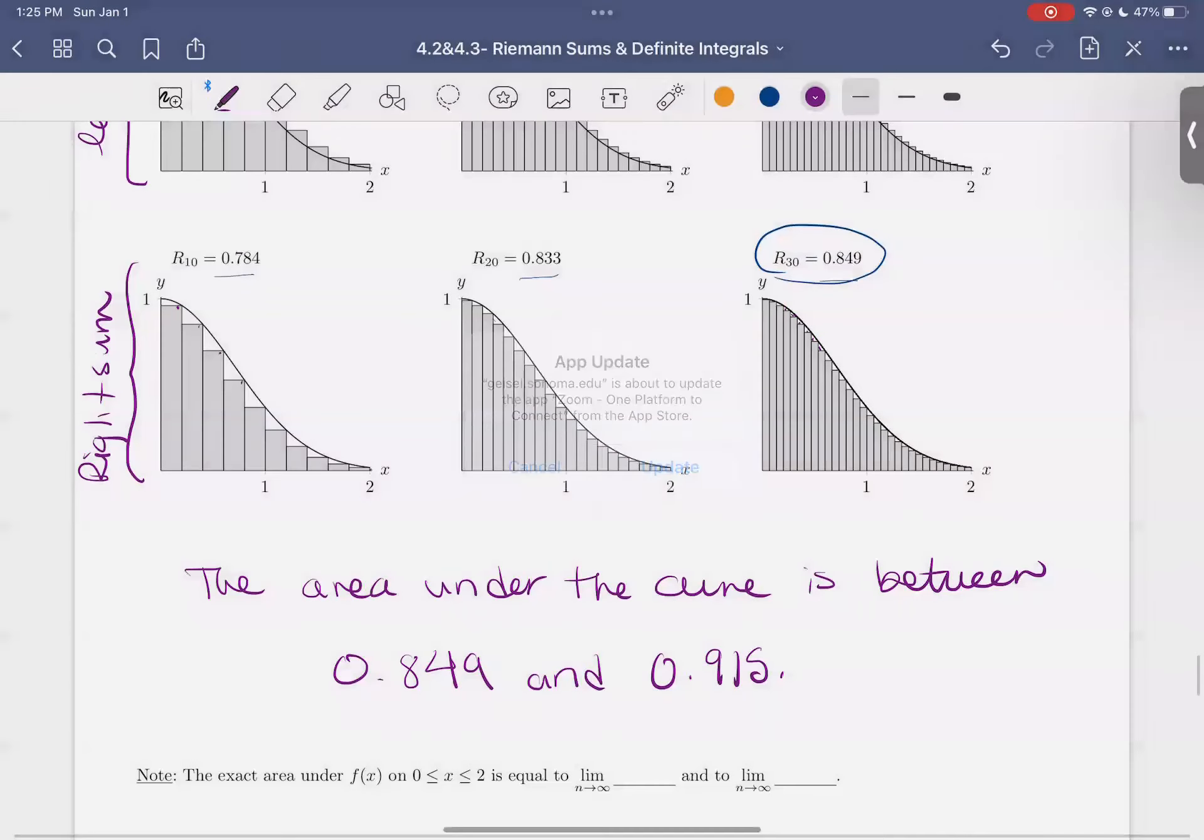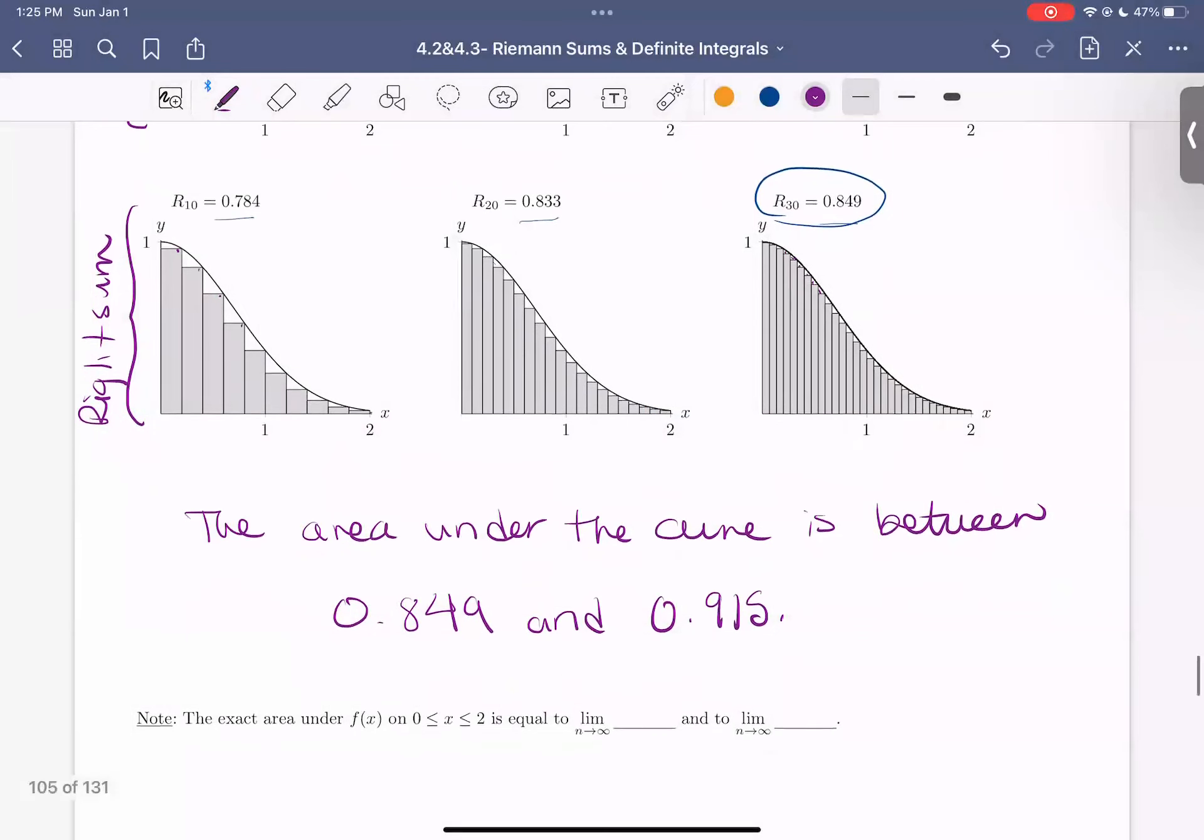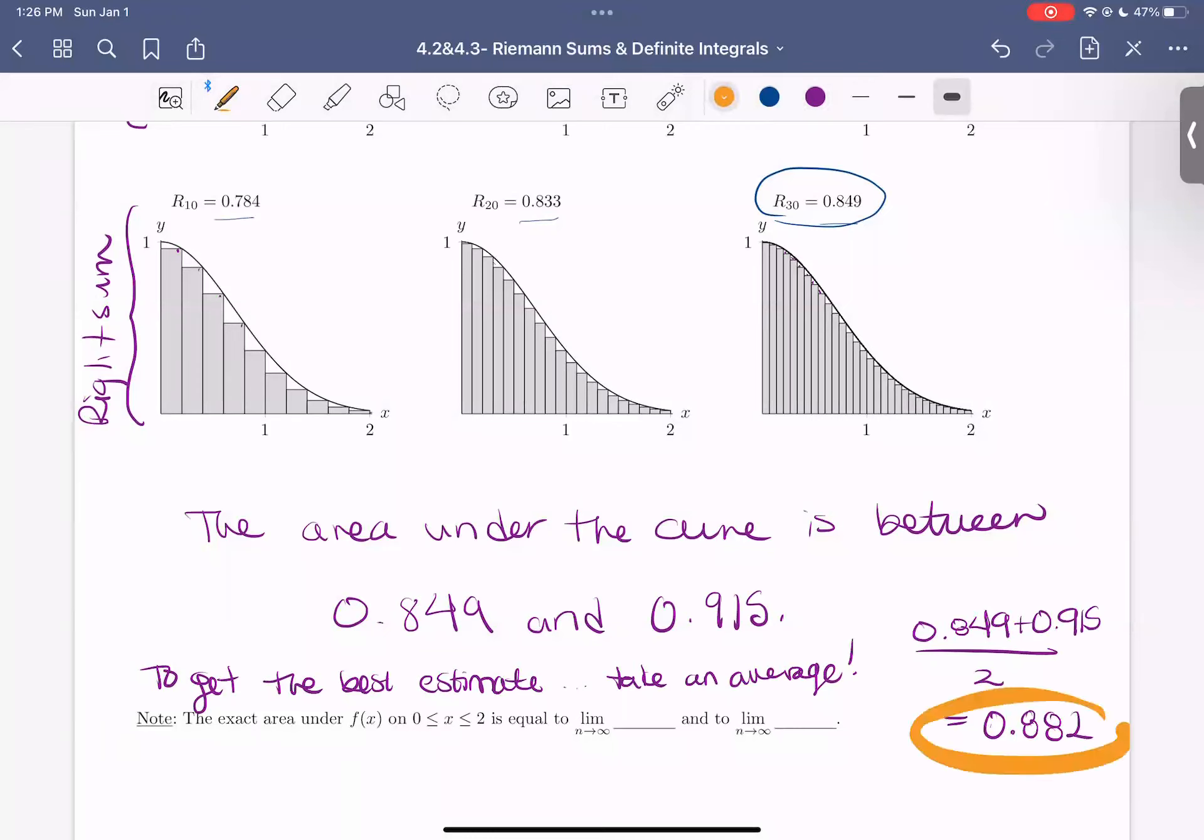So one common thing to do is to take an average of those two. So we can say, to get the best estimate for the area, let's take an average of these two areas. So we can take 0.849 plus 0.915, divide by 2, and we get 0.882. So that's our best estimate we can make using the information we've been given.